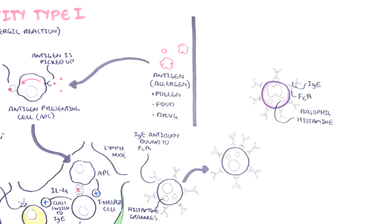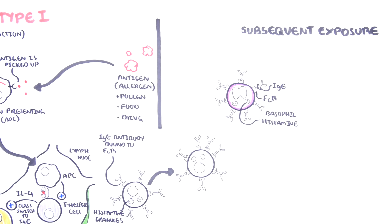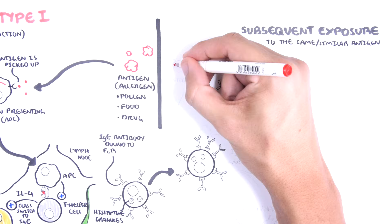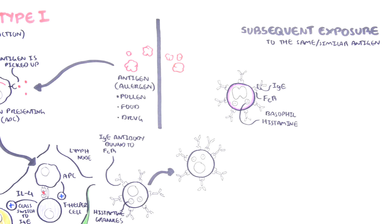So now, on subsequent exposures to the allergen, what happens is that the bound IgE on mast cells will recognize the allergen.